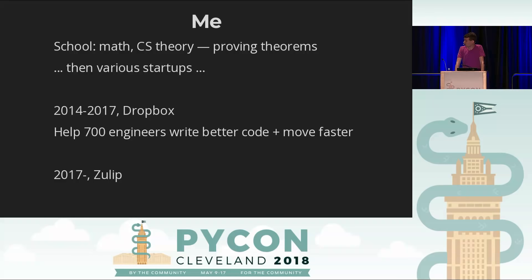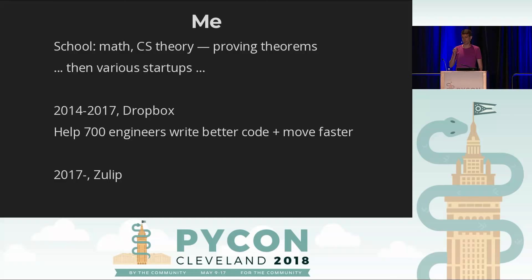After various startups, I ended up at Dropbox for about three years, where I helped create a team charged with making software better, faster, building better systems, moving faster, and learning faster what the right products are to build. By the time I left, we had 700 engineers, most of them working in Python, most of those in the same giant code base — several million lines. That was quite an education.